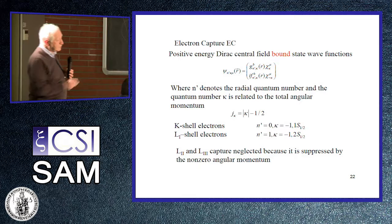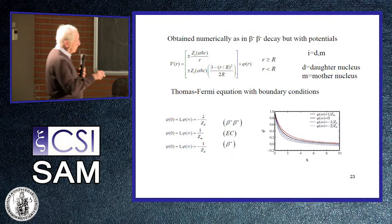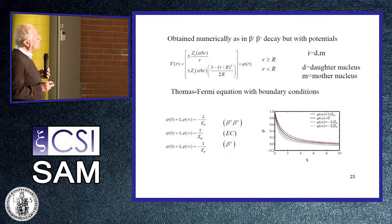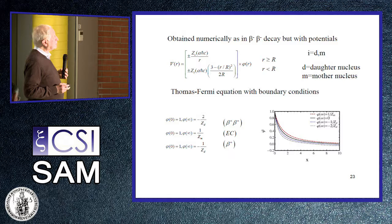The L2, L3, M1, M2, and M3 captures can be neglected because they are suppressed by non-zero angular momentum. This is true for this process, but for certain experiments like electron capture of holmium-163, one also needs to include captures from M-shells and higher shells. This is again obtained numerically, but with potentials of different signs for beta-plus beta-plus versus beta-minus beta-minus.